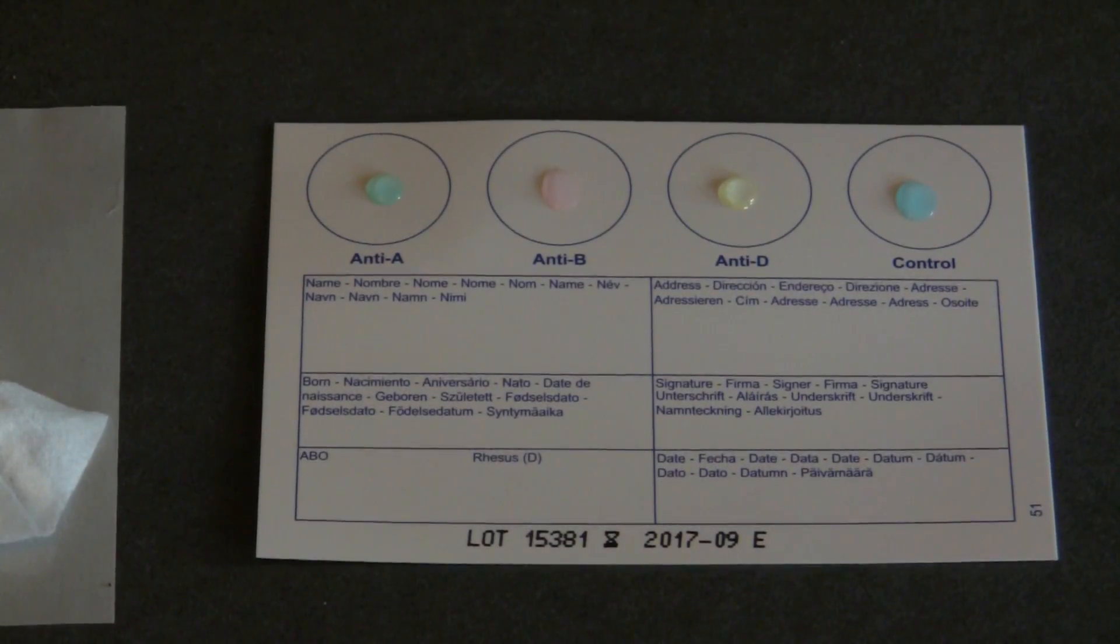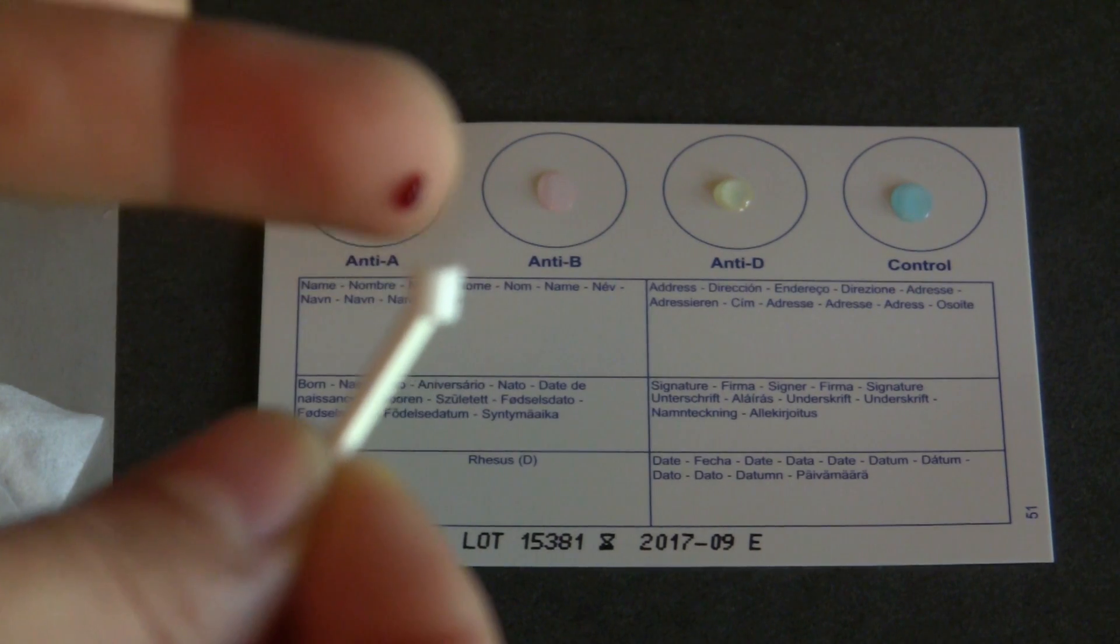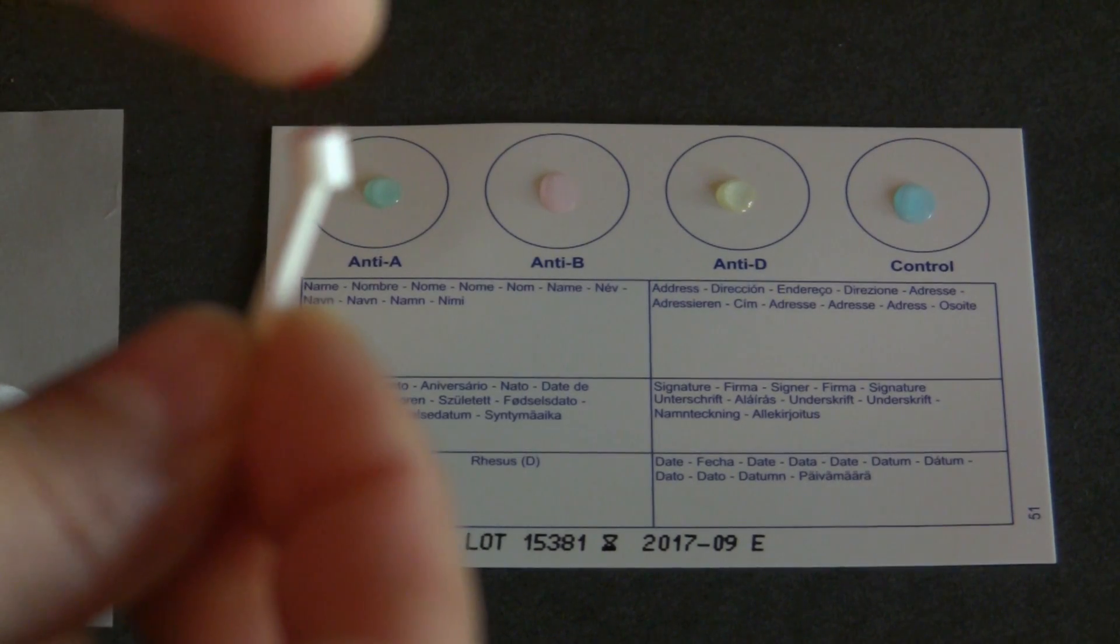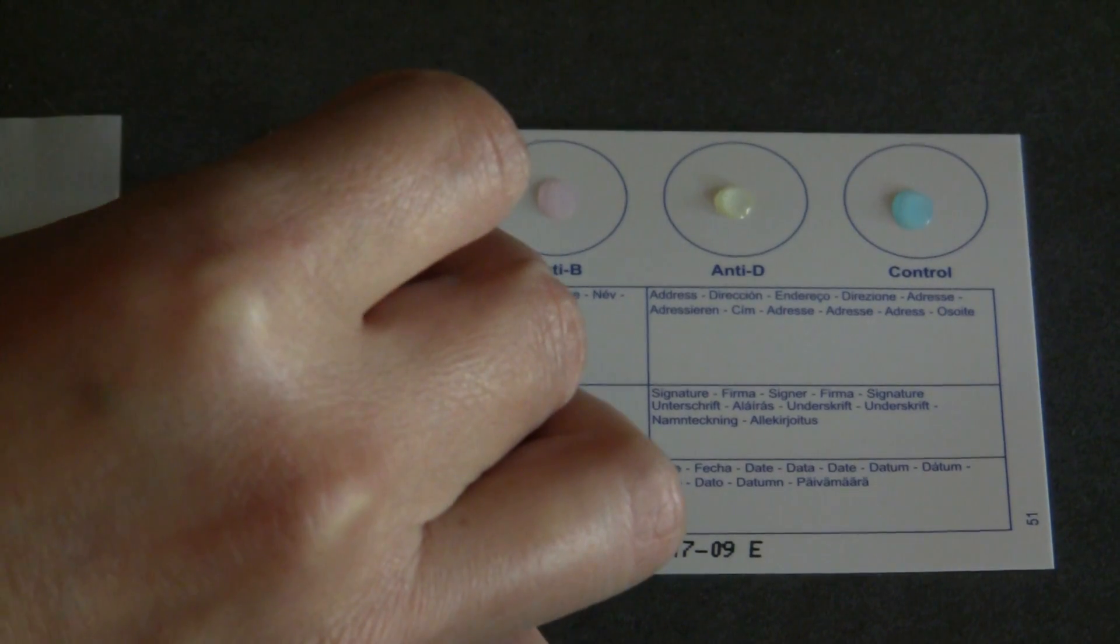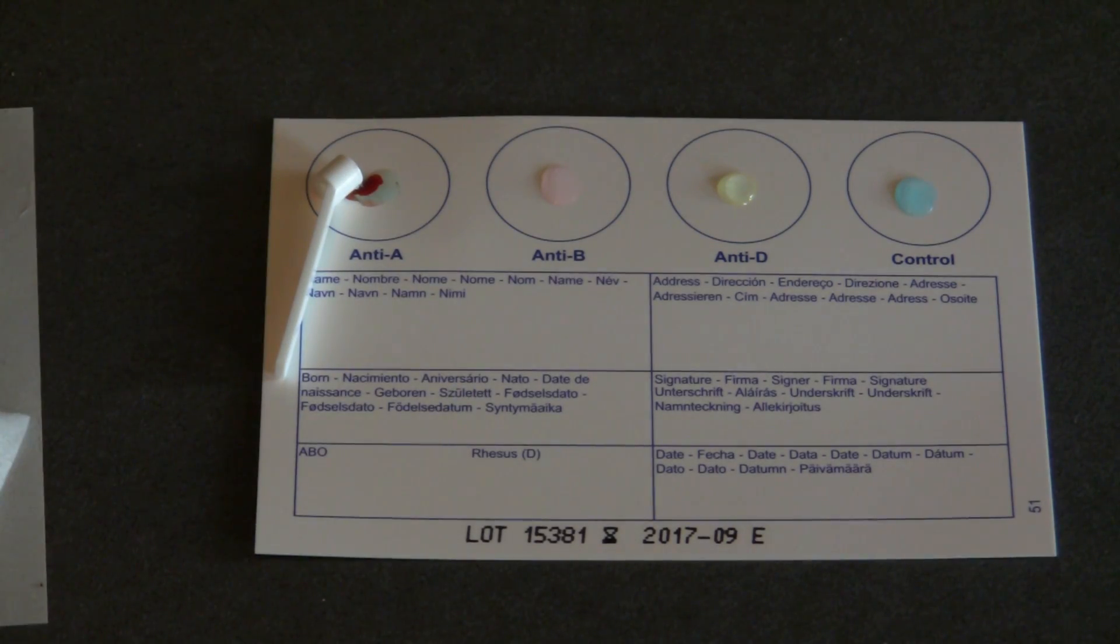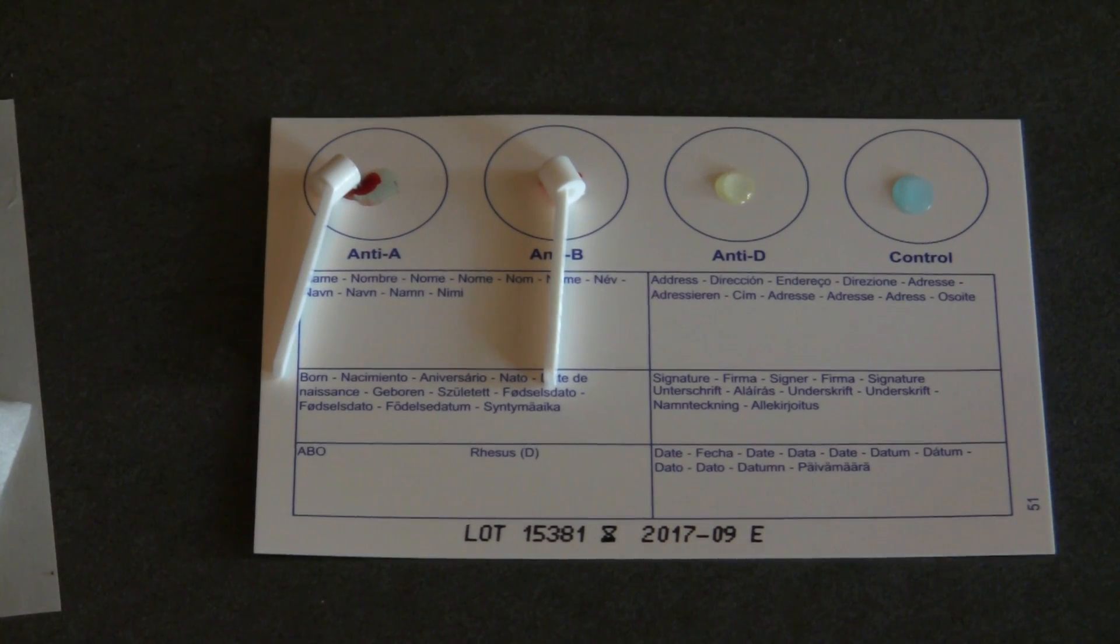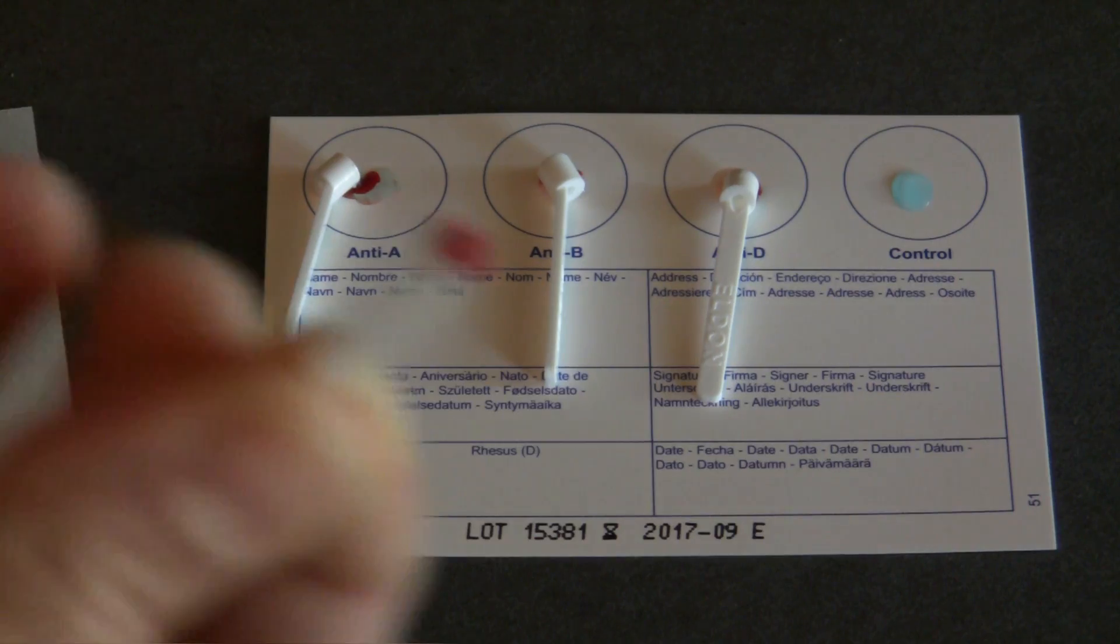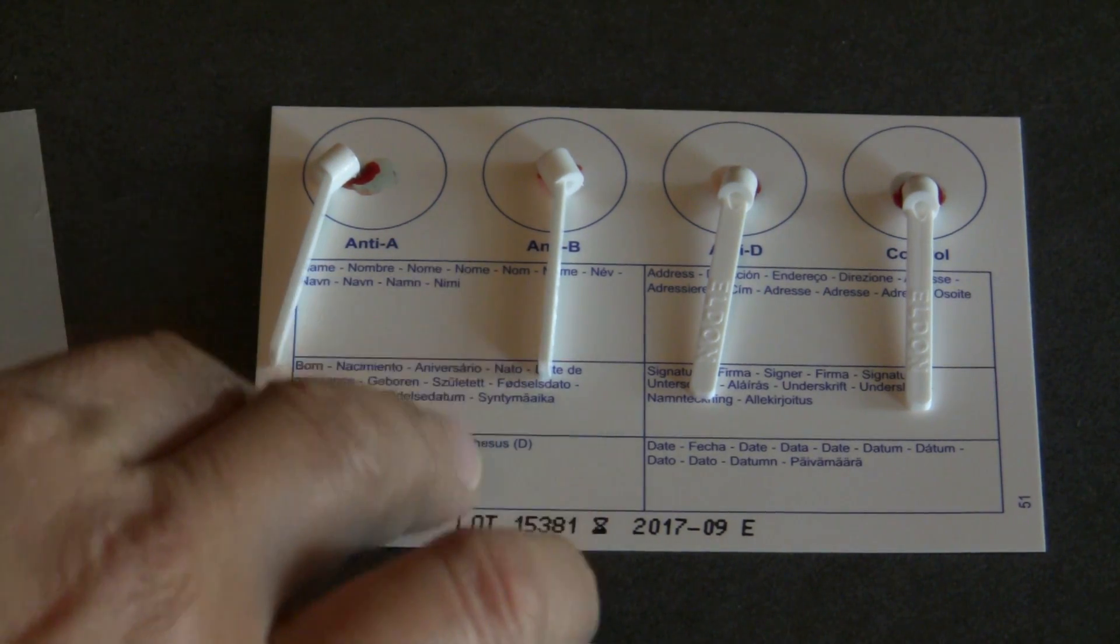There's drop number one. So I'm putting my arm backwards so I can get more blood out. Number two. Number three. I've got blood. Four. Yep, and now we swish it around.